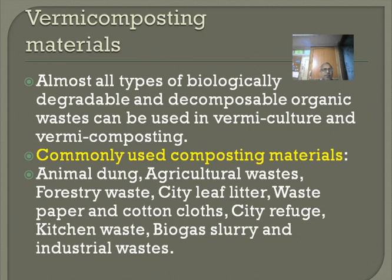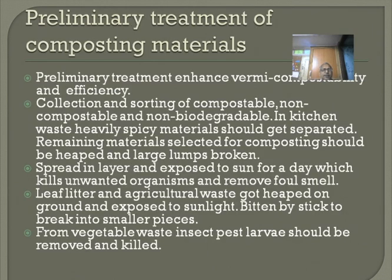Regarding materials used for vermicomposting: almost all types of biologically degradable and decomposable organic waste can be used. The commonly used composting materials include animal dung, agricultural waste, forest waste, city leaf litter, waste paper and cotton cloths, city refuse, kitchen waste, biogas slurry, and industrial waste.